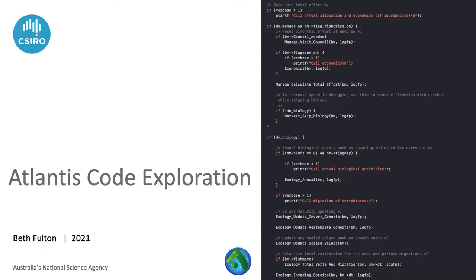Welcome to the fifth presentation from the Atlantis course. This one is on the structure of Atlantis's code — a little bit on how you write C code in the first place and how to interact with it, so that you can understand the best way of stepping through the code. Being able to get into the code and see exactly what it's doing at any one time is a far more efficient way of working with Atlantis, particularly during calibration, than just changing parameters, pulling the handle, and seeing what's different.